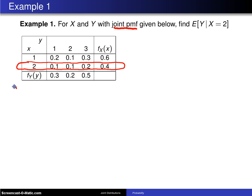So the first step to finding this conditional expected value is we have to find the conditional probability mass function of y given that the random variable x is equal to 2.